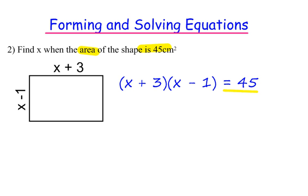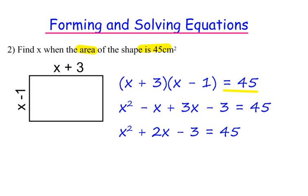To solve this, let's first expand it. So x times x gives me x squared, x times minus 1 is minus x, 3 times x is 3x, and then 3 times minus 1 is minus 3. And that's all equal to 45. I can gather that together: x squared plus 2x minus 3 equals 45.